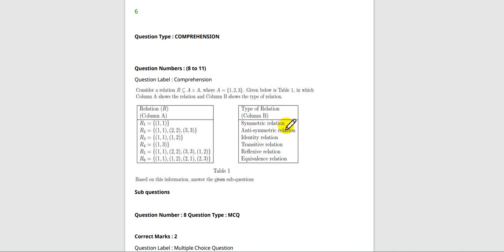First is symmetric relation. What is a symmetric relation? If (A, B) belongs to R, then (B, A) also belongs to R, for all (A, B) belonging to R.